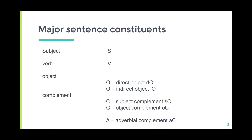In order to understand sentence analysis and sentence structure, you need to be familiar with the major sentence constituents: the subject, the verb, the object — which could be of two types, direct object and indirect object. The complement is also a crucial constituent and could be of two types: subject complement or object complement. And the adverbial complement, which is an optional constituent.